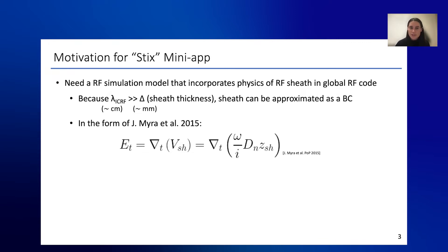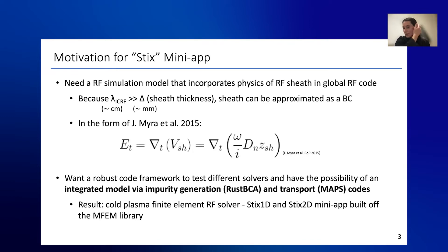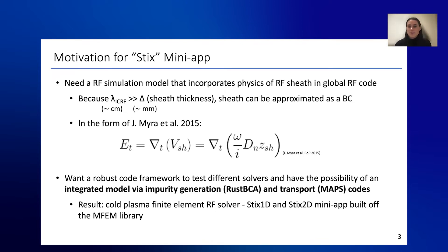The boundary condition sets E-tangential to the tangential gradient of the oscillating RF potential, which is dependent on the electric field displacement normal to the wall and a complex sheath impedance. One of the main motivations behind STICKS was to incorporate this boundary condition in the RF code. The end goal will be an integrated model encapsulating other physics besides RF sheaths, such as impurity generation, and there are plans to couple it to a transport code called MAPS.